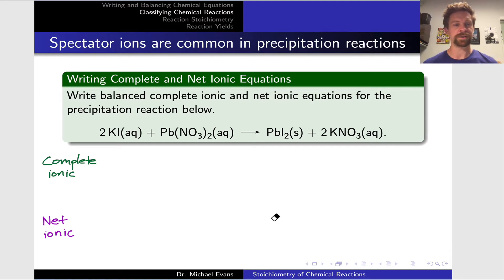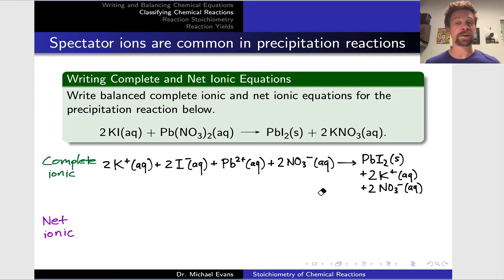Everything here is an ionic compound: potassium iodide, lead nitrate, lead iodide, and potassium nitrate. In the complete ionic equation, we're going to blow up all of the aqueous ionic compounds, not the solid because that is physically an associated ionic compound. For all the aqueous ionic compounds, we'll blow them up into their component ions: 2K+, 2I-, Pb2+, and 2NO3- on the reactant side. On the product side, our associated PbI2 solid, 2K+, and 2NO3-.